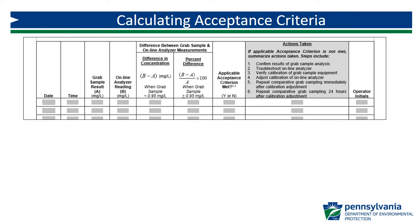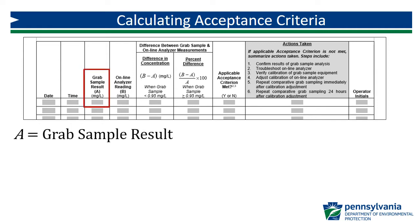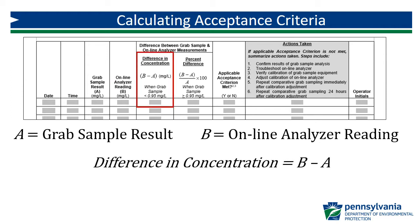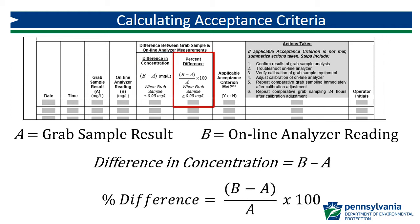Let's look at how to complete the calculation to determine if follow-up action is necessary. A is the result of the grab sample analysis, which will act as the basis for comparison. B is the online analyzer reading at the time of grab sample collection. If the grab sample result is less than 0.95 milligrams per liter, calculate the difference in concentration by subtracting the grab result from the online reading: B minus A. If the grab result is greater than or equal to 0.95 milligrams per liter, calculate the percent difference by finding the difference, dividing by the grab result A, and then multiplying by 100.